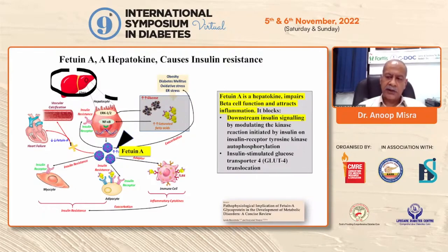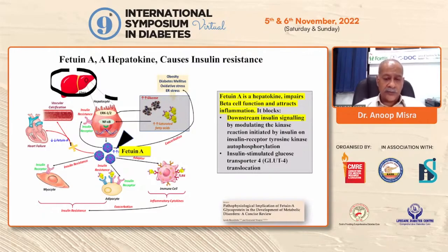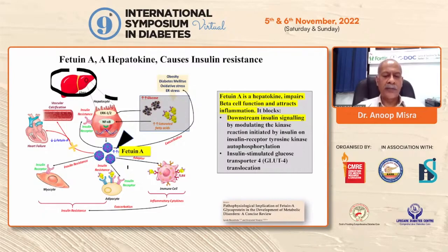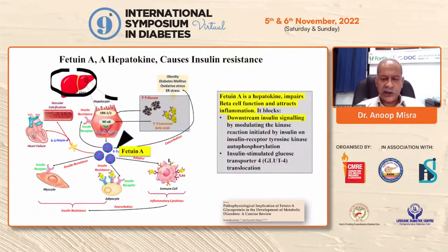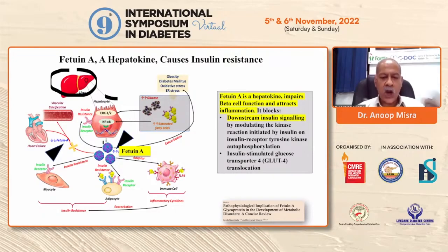The downstream insulin signals are moderated by kinase reactions initiated by insulin on insulin receptor tyrosine kinase autophosphorylation. Once this happens, myocyte insulin resistance and adipocyte insulin resistance both go up. Fetuin-A also has a propensity to activate macrophages. Interestingly, high fetuin-A causes insulin resistance, while low fetuin-A causes heart failure and vascular calcification — both are detrimental.